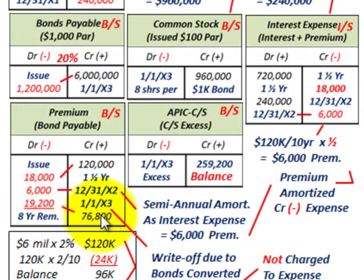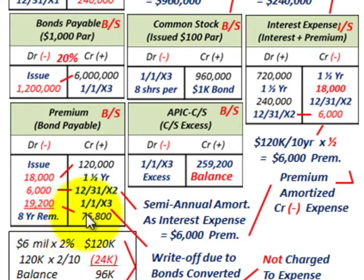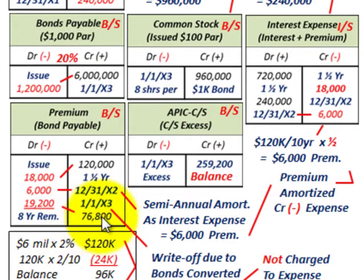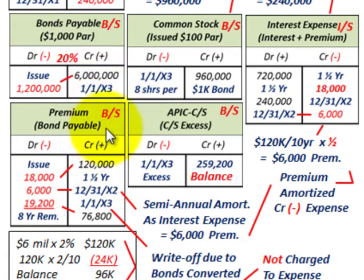Our net balance on the premium after the write-off — starting with $120,000, minus $18,000 and $6,000 (which went to reduce interest expense), minus the $19,200 write-off — leaves $76,800 remaining. Eight years remain on this bond, so going forward you divide the remaining premium by those eight years for your yearly amortization, and half of that for semi-annual. The $19,200 is written off and the bonds are transferred into common stock.